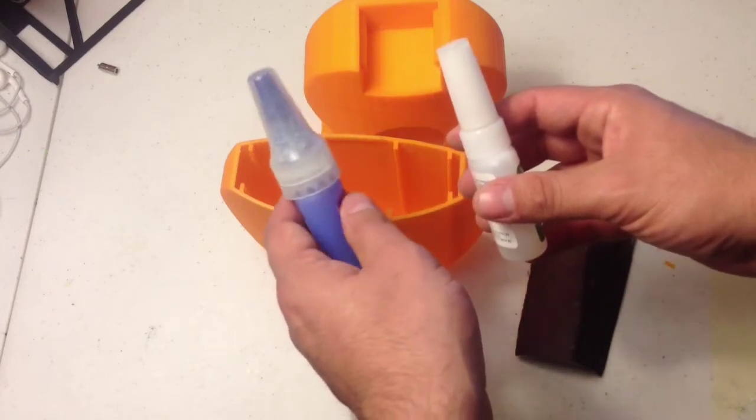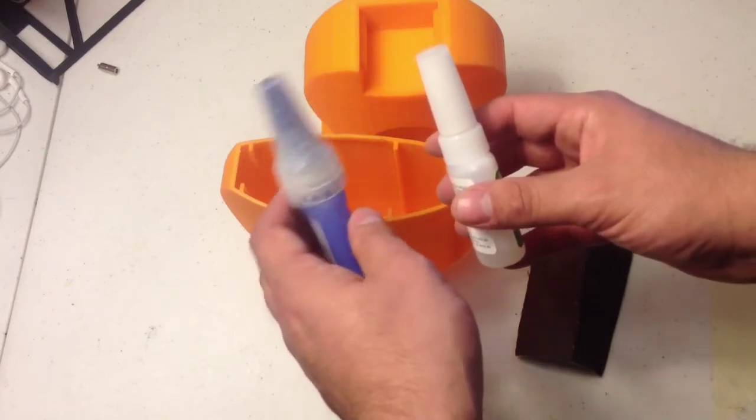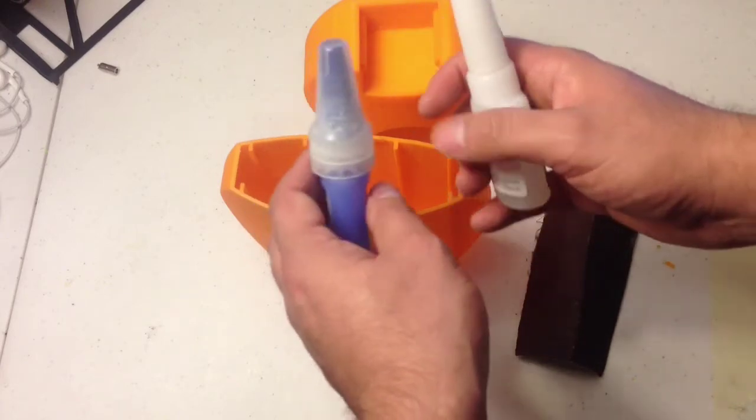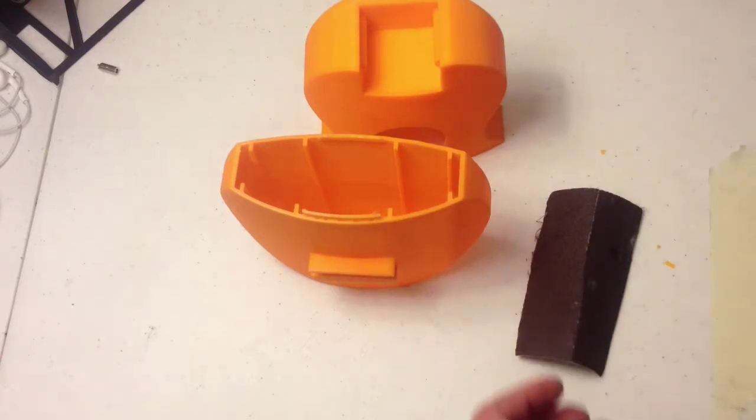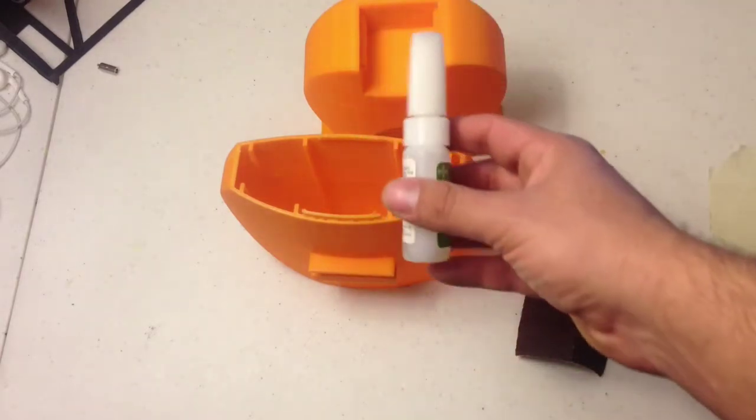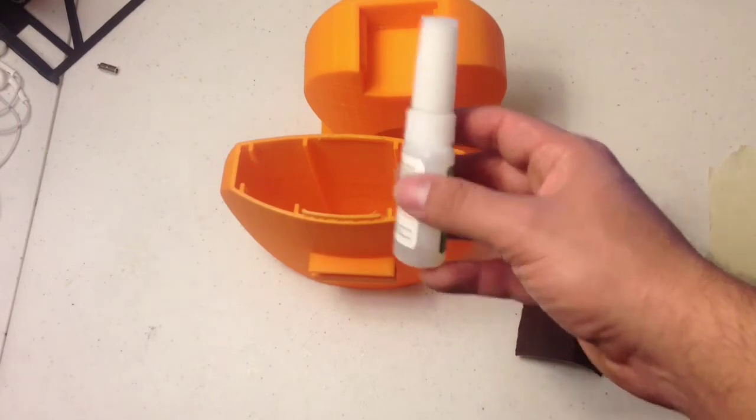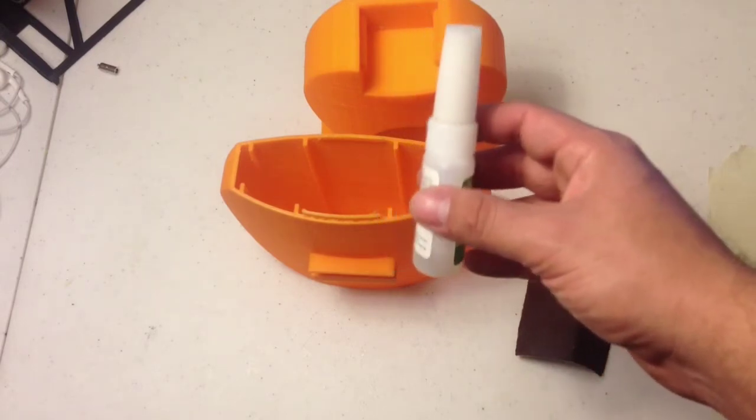Because you want to have at least a little bit of time to adjust just in case it's slightly off. So this superglue gives me five to ten seconds, which is sufficient to get it just how I want it.